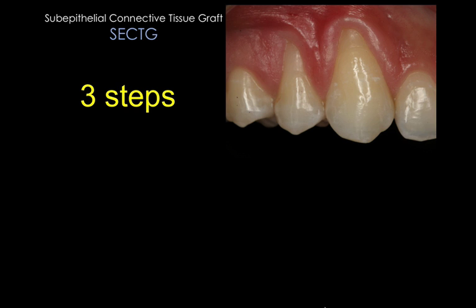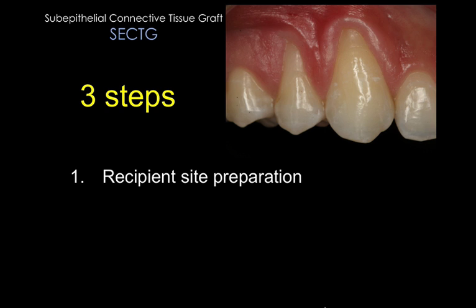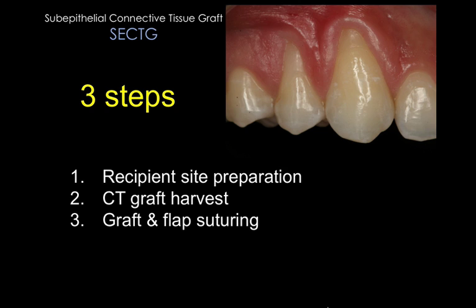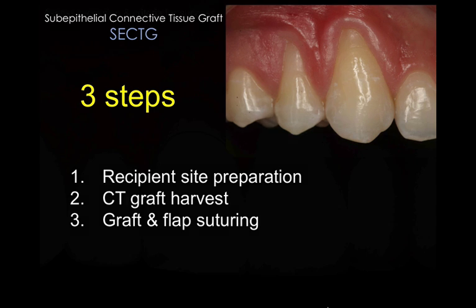The CT graft has three main steps. The first step is preparation of the recipient site — the site of the recession — which includes mechanical and chemical preparation, creating a split thickness flap, and mobilizing it coronally so that when you suture, you'll have the least tension possible and allow for great healing. Step two is harvesting the CT graft from the palate. Step three is suturing the graft onto the recipient site and covering it with the flap with tension-free closure.